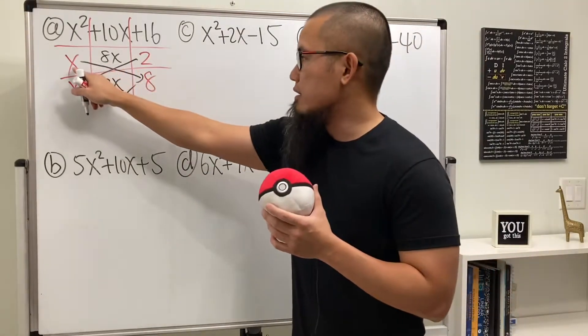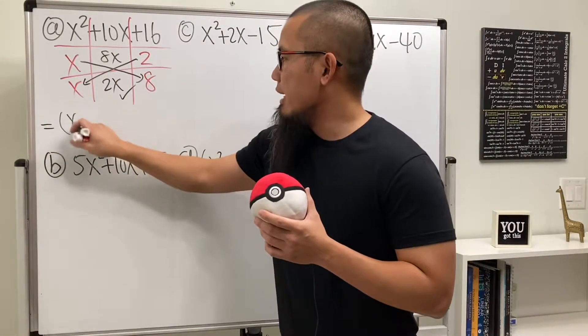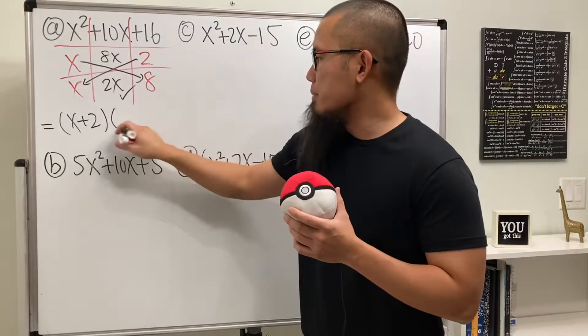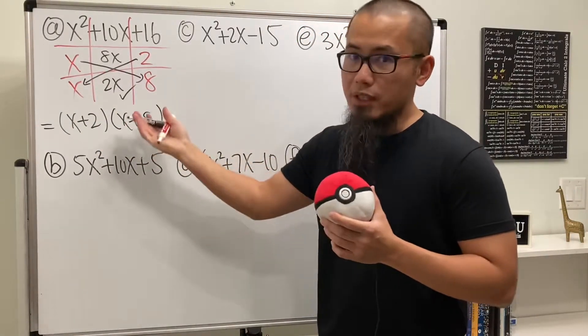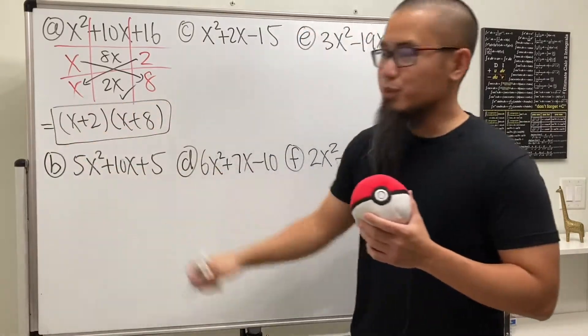And when you write down the answer, be sure you go across. So the answer for this is x plus 2 times x plus 8. And then we are done. Just like that.